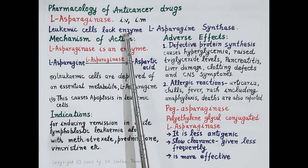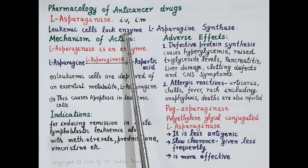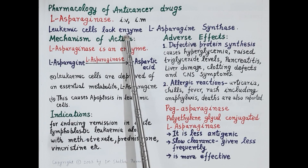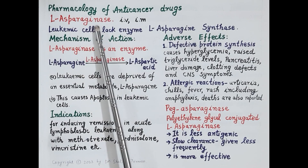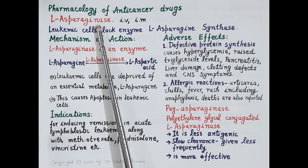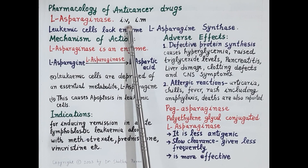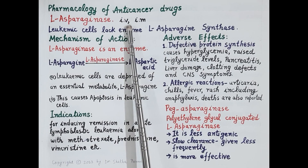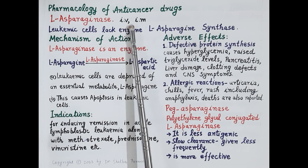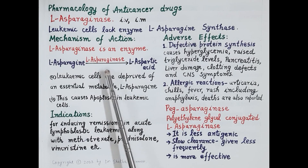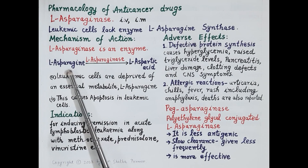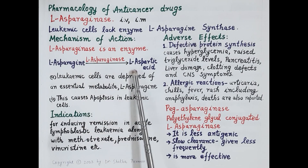Leukemic cells depend upon the external supply of L-asparagine for protein synthesis. L-asparaginase is an anti-cancer drug given either IV or IM. It is an enzyme that breaks down L-asparagine to L-aspartic acid.